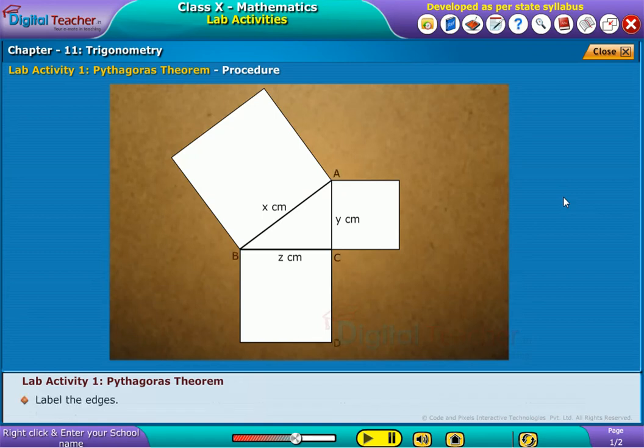Label the edges. Extend the sides FB and ZA of the square ABFG, which meets ED and CI. Assume the intersecting points as P and Q respectively.